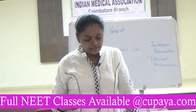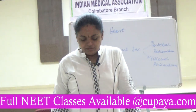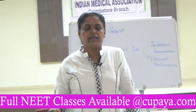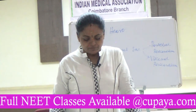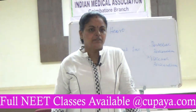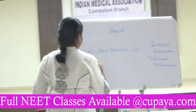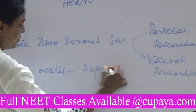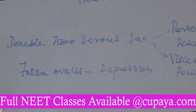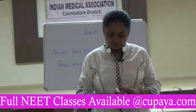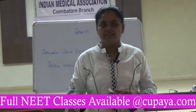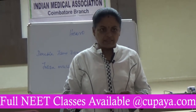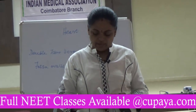The auricle is divided by an inter-auricular septum. In this septum there is a depression called the fossa ovalis. This fossa ovalis depression is present in the inter-auricular septum.